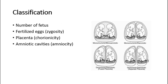The classification of multiple pregnancy can be classified based on the number of fetuses, whether twin, triplets, or quadruplets; the number of fertilized eggs, which the term is zygosity; how many placentas there are, called chorionicity; and how many amniotic cavities, called amnionicity.